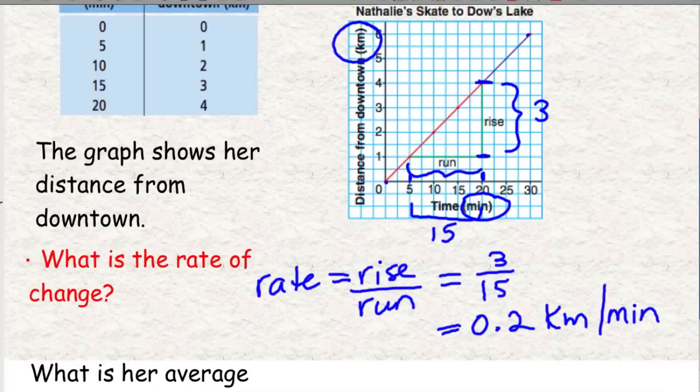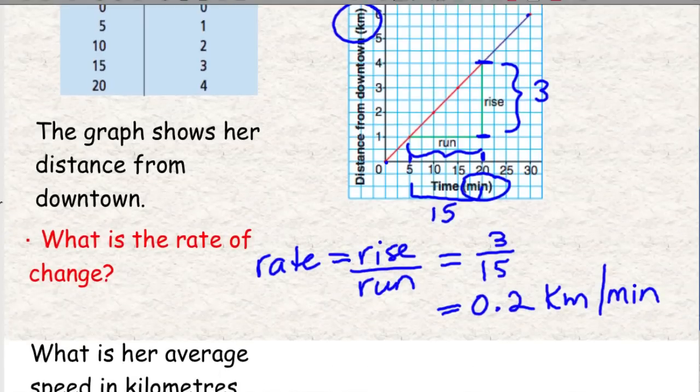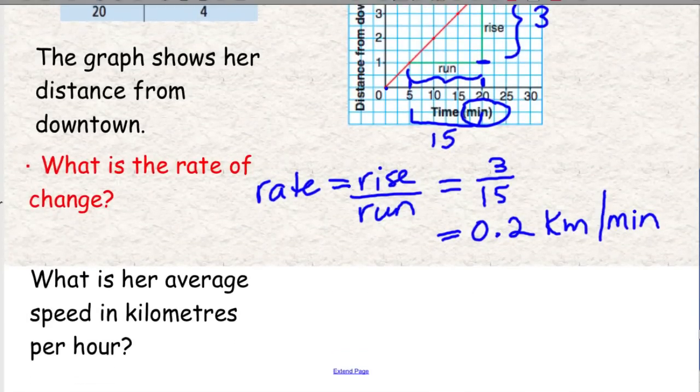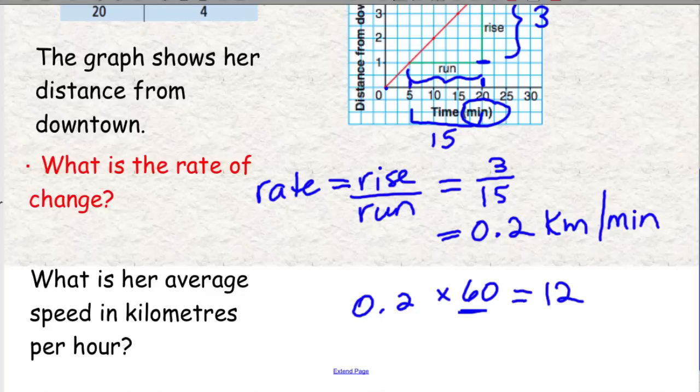And then it says, what is her average speed in kilometers per hour? We have it in kilometers per minute, which, again, sounds kind of like a weird speed. We don't usually give a speed in kilometers per minute. What we need to do is multiply by 60, because there are 60 minutes in an hour. So, if I take 0.2 and I multiply it by 60, I get 12. That's 12 kilometers per hour, which makes more sense. She's skating down the canal, so she's going 12 kilometers per hour. That's her speed.